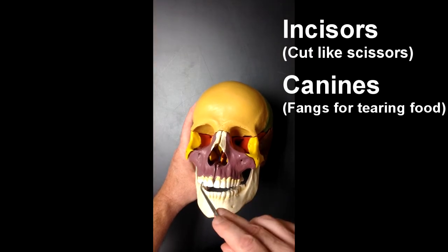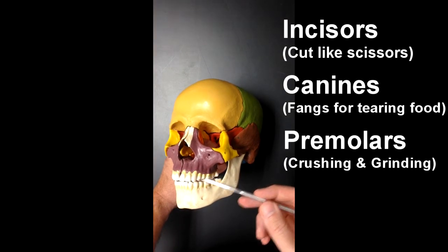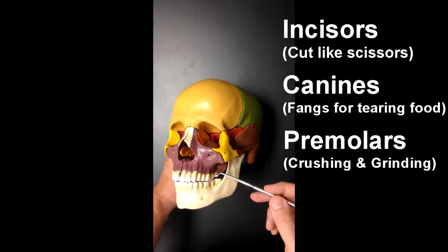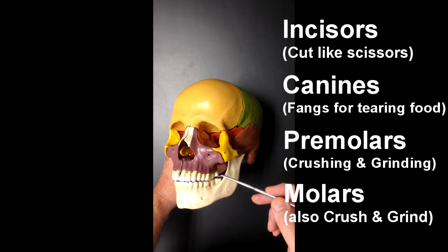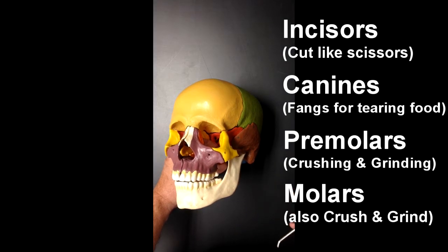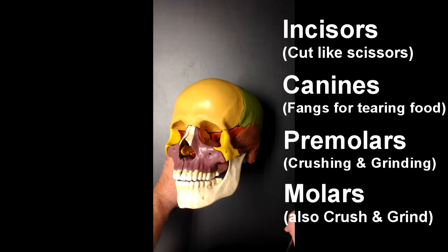The canines tear or rip food — meat — so they're a little bit sharp and pointy; these would be the fangs. Then we've got the premolars, two on each side, and then the molars, and there'd be three of these. Oftentimes this back molar doesn't emerge until later on, so sometimes it's called a wisdom tooth, and those can get impacted and infected, and oftentimes people elect to have these removed.